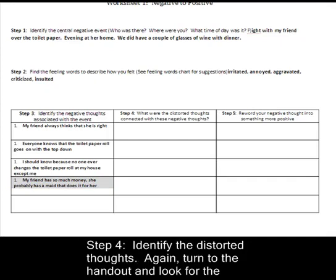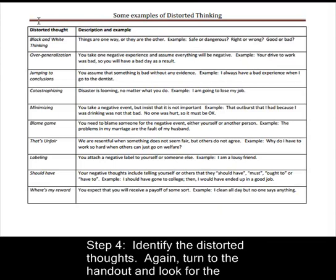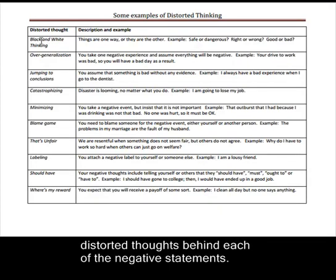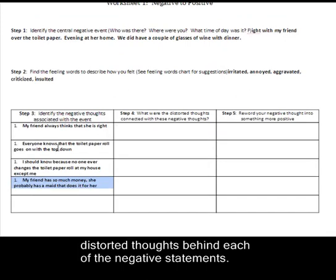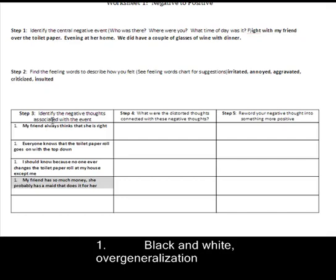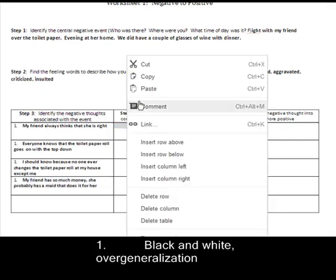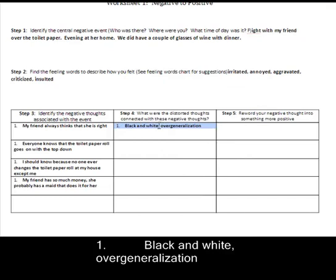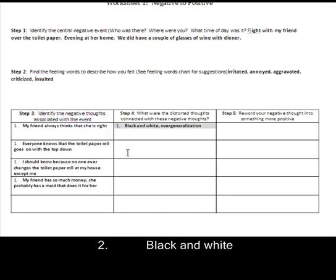Next I have to identify the distorted thoughts, so I'll turn to the handout and look at each negative thought to determine what category it falls under. My first thought — my friend always thinks she's right — I would think that is an example of black and white thinking and overgeneralization. For the next thought — everyone knows that the toilet paper always goes with the top down — that is also a black and white thought. You can't say something pertains to everyone; obviously my friend does it one way and I do the other.